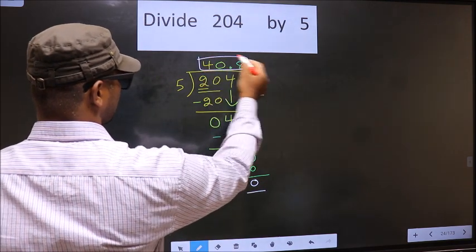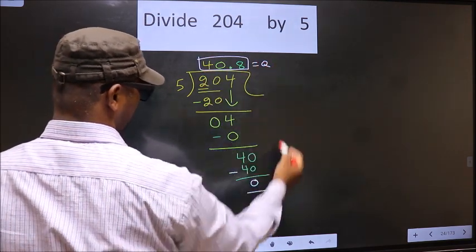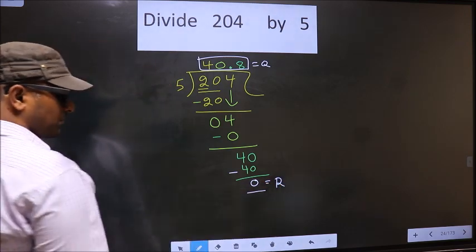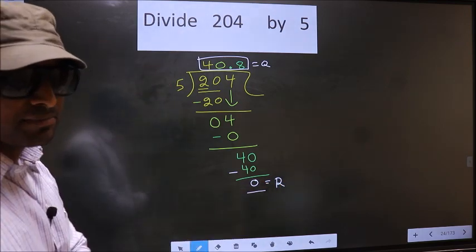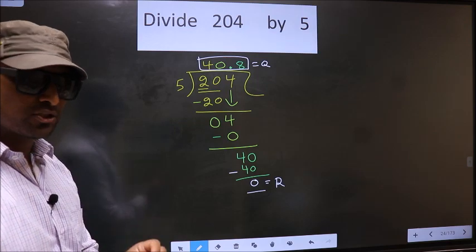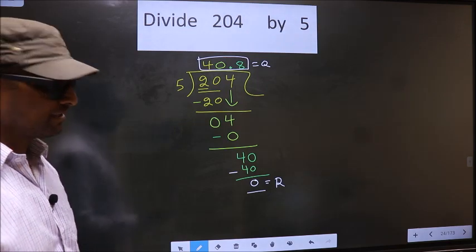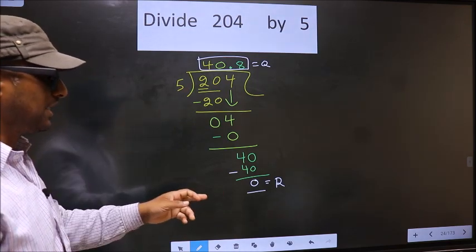Now, you subtract, we get 0. So, this is our quotient and this is our remainder. Did you understand where mistake happens? You should not do that mistake. Am I clear?